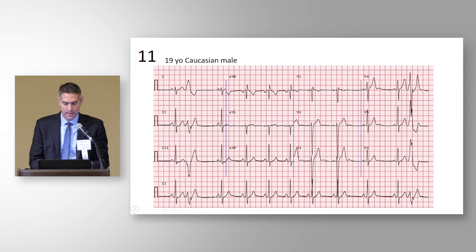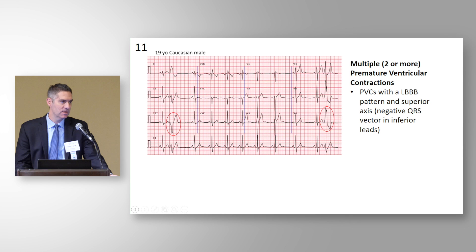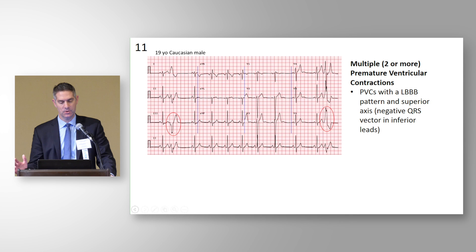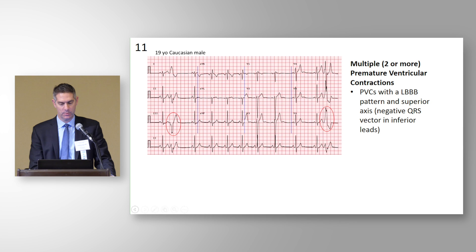This is a 19-year-old Caucasian male. Getting down to the rhythm strip, it's easy to see premature ventricular contractions. PVCs in general are reasonably common. On a 10-second 12-lead ECG, one PVC would be considered acceptable. Having two or more is somewhat arbitrarily our cutoff for what we consider abnormal, requiring more investigation.